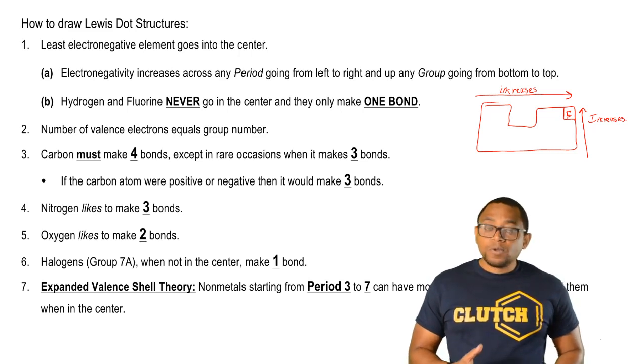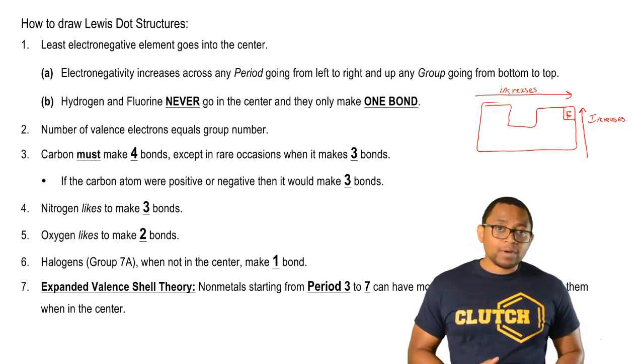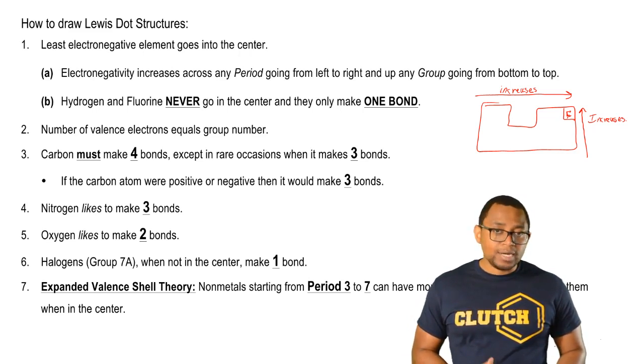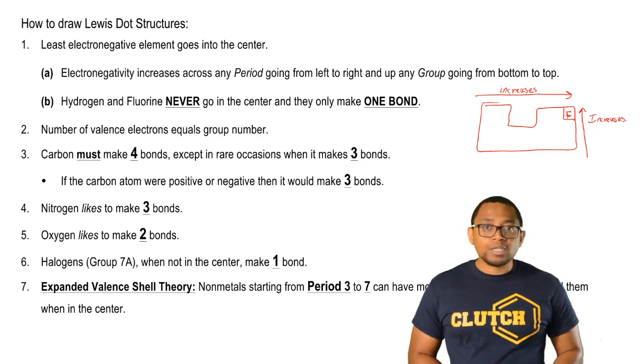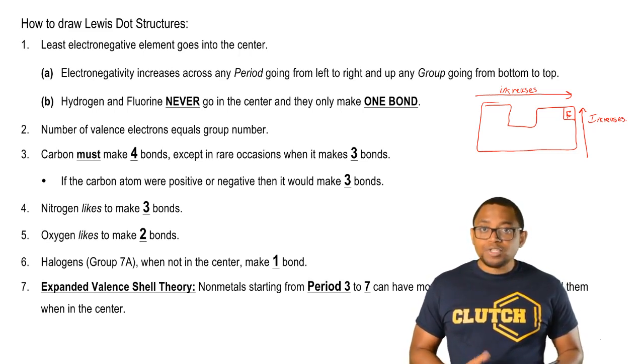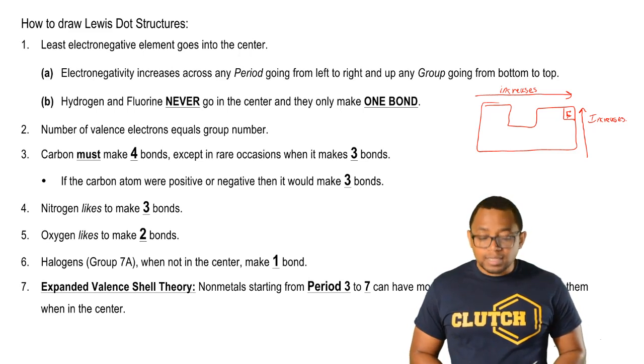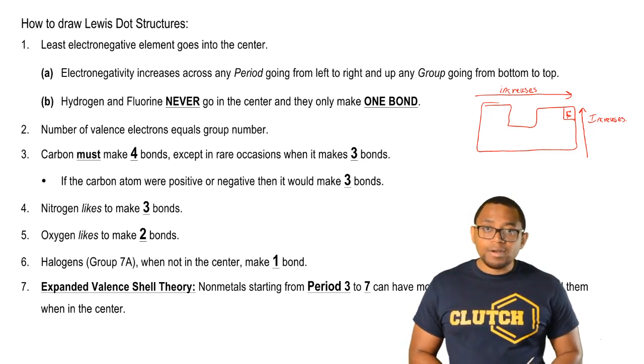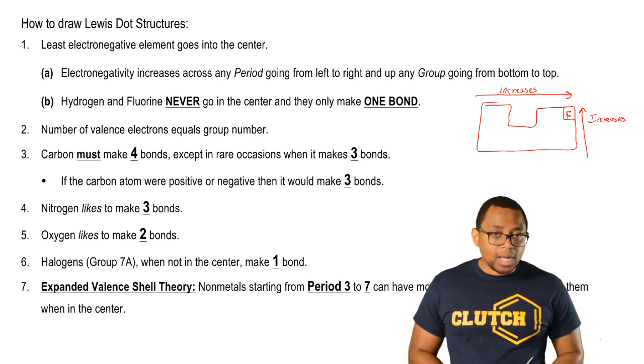Now besides fluorine, hydrogen also never goes in the center. That's because hydrogen has one valence electron and it only needs one more to become just like helium. If they were in the center, it would be grabbing onto too many electrons. It would be sharing too many electrons and go beyond what it needs. Both never go in the center and both only make one bond.